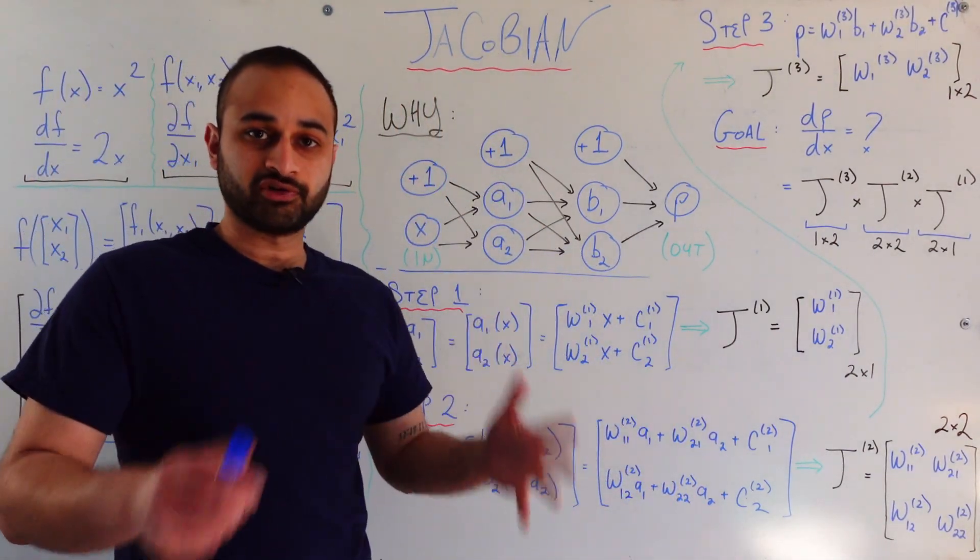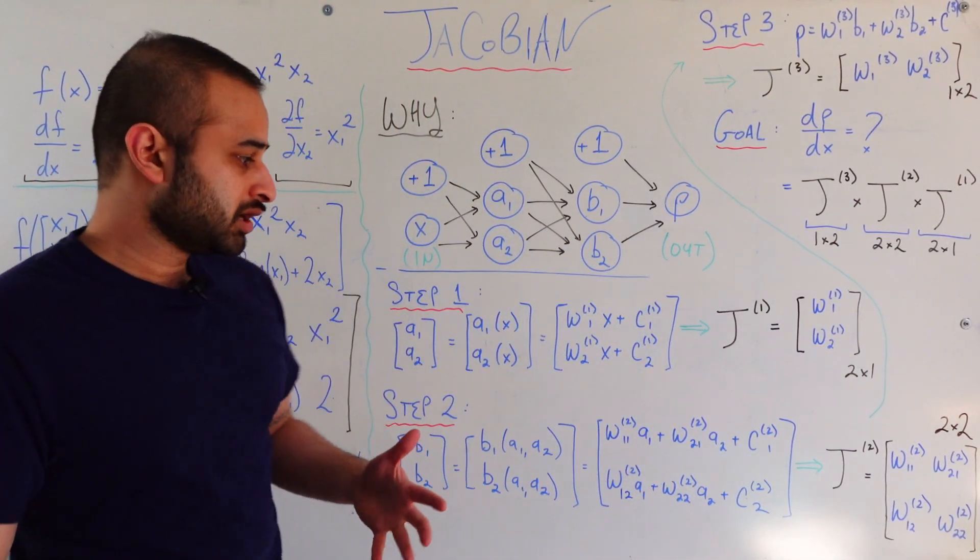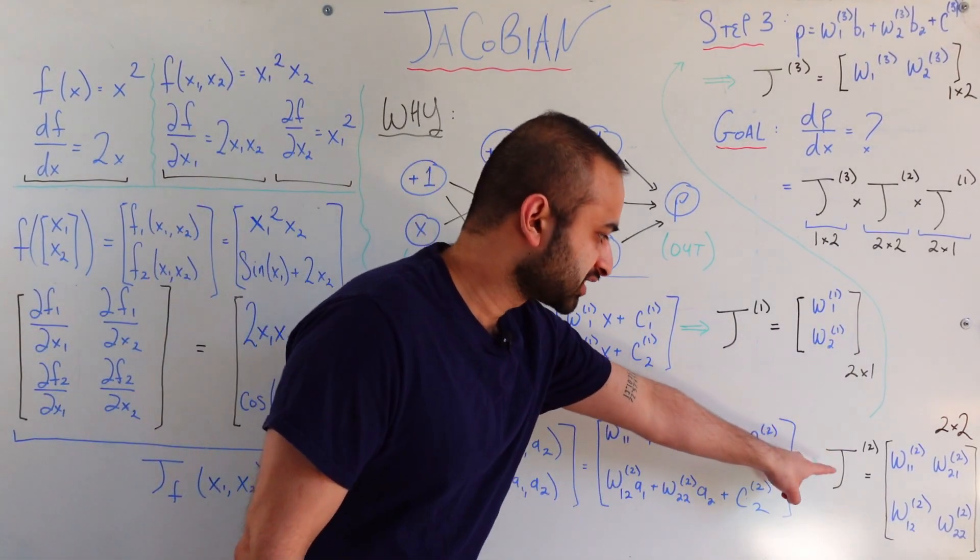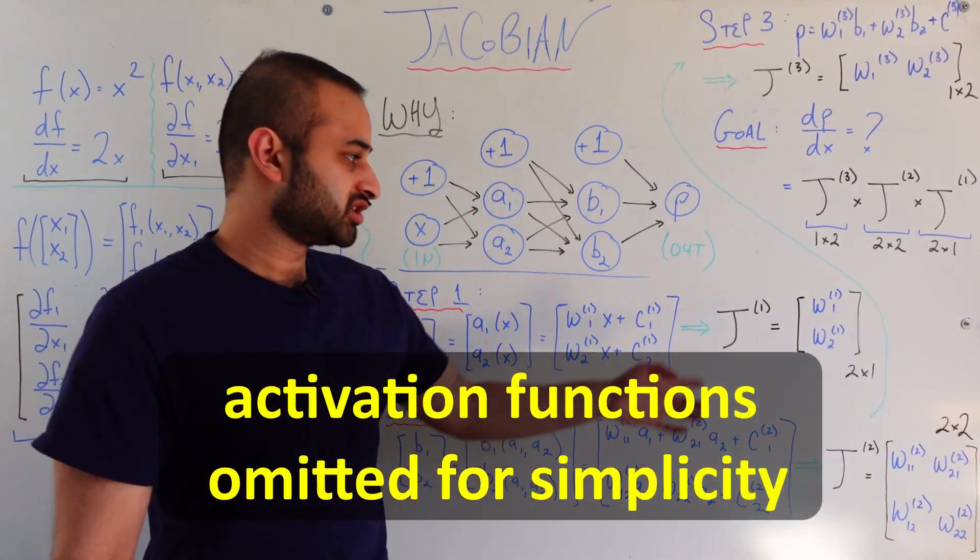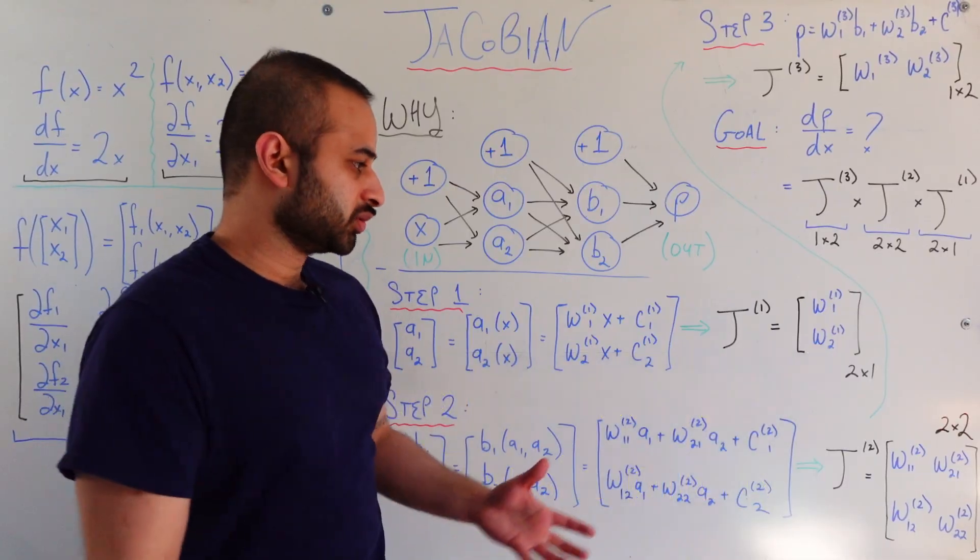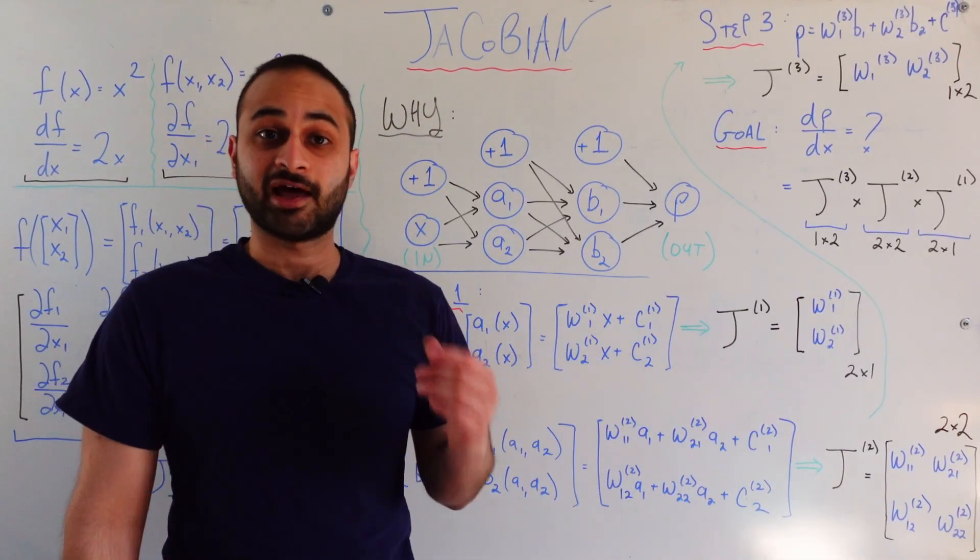Which means that the size of our Jacobian is going to be two by two. And we can go through all the math. You can do the same derivative calculations, but you'll find that Jacobian in this case looks like this. So very similar to up here where it's just collecting all these coefficient terms.